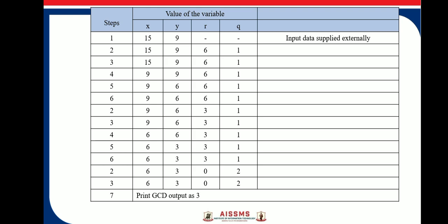Now here, step 6 is, go to step 2. So in step 2, again, values are 6, 3 and here, 6 is divided by 3. So answer is, remainder is 0 and quotient is 2.